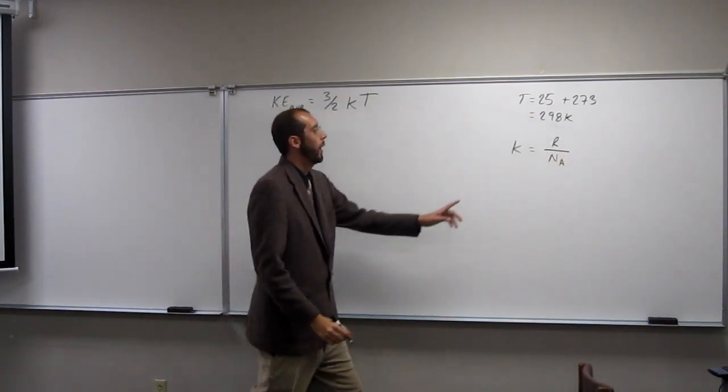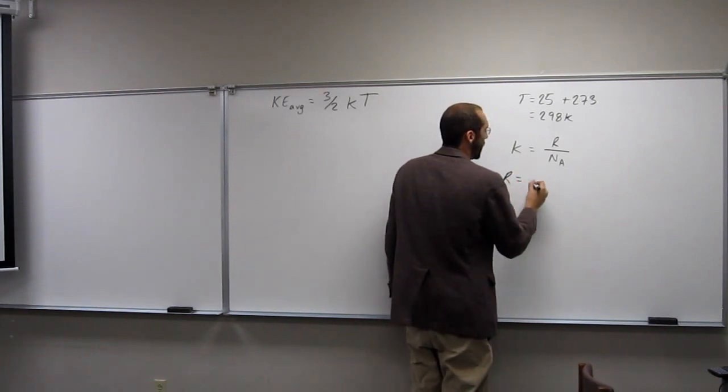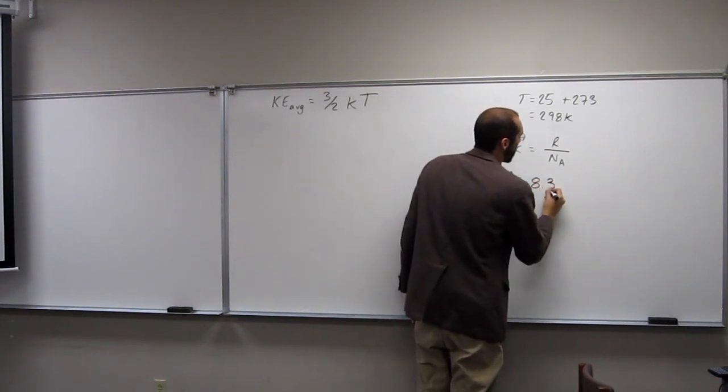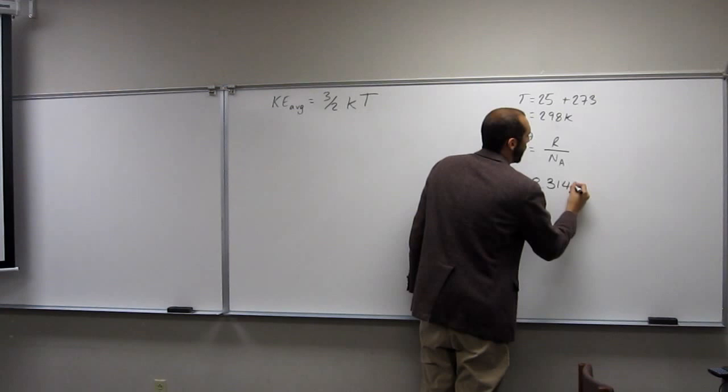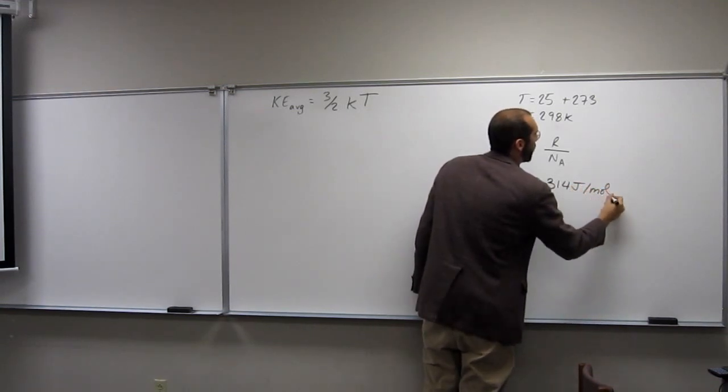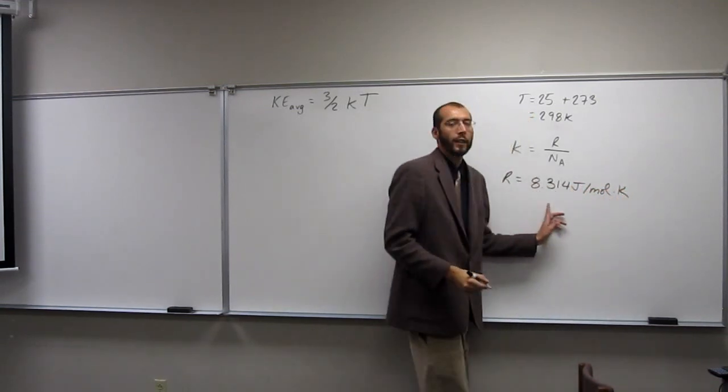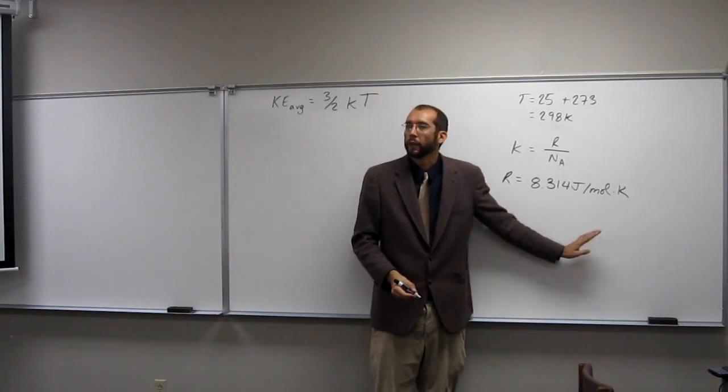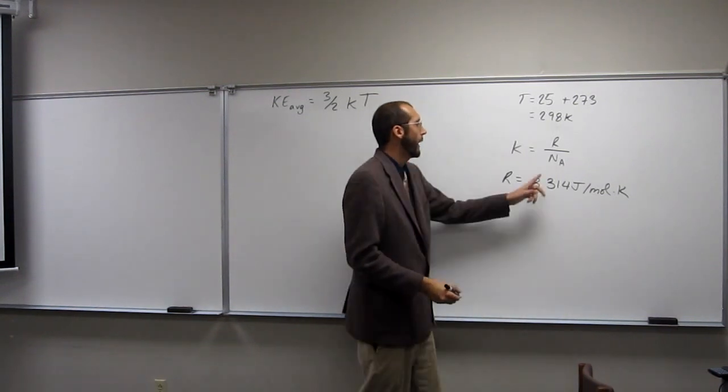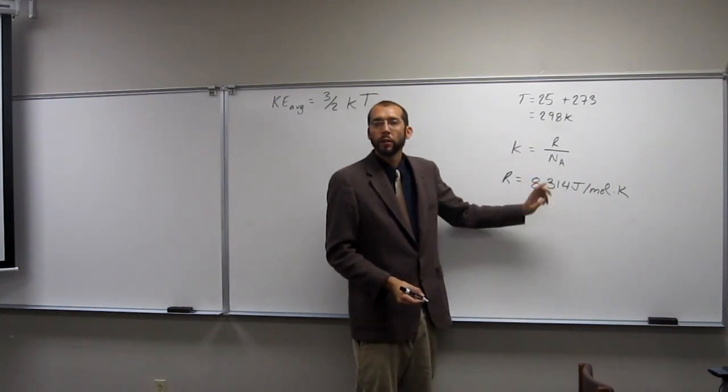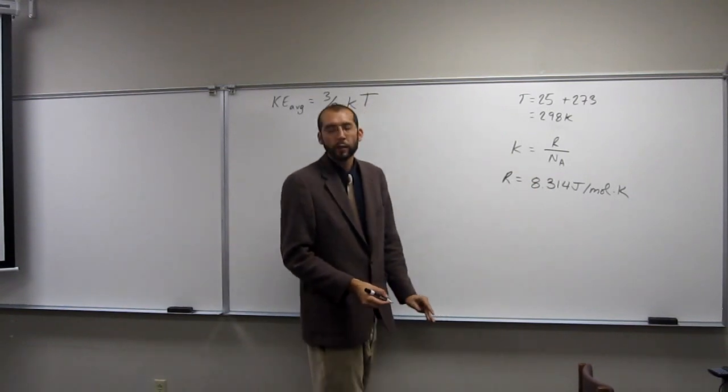So r, remember, is 8.314 joules per mole Kelvin. This is given to you here. This will be given to you. nA is Avogadro's number, so 6.022 times 10 to the 23rd.